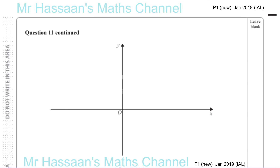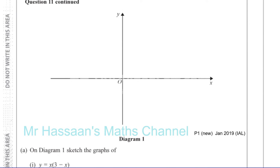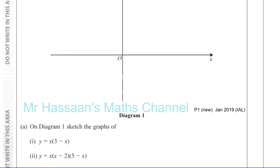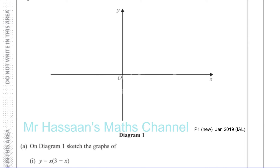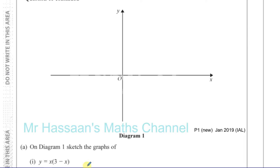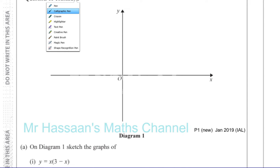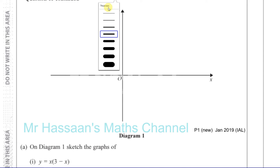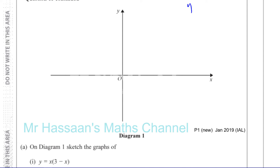Let's just go to the next page. We have the axis there, and I put the questions down here. So y equals x times 3 minus x.